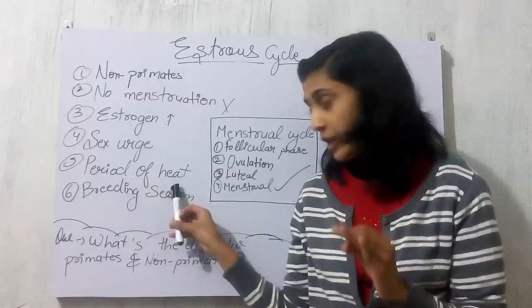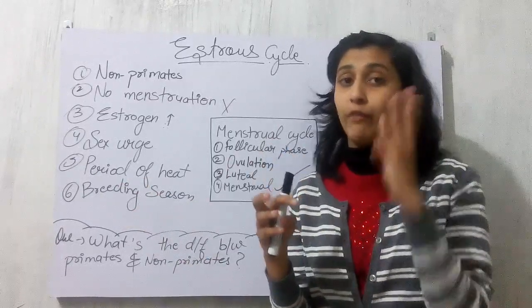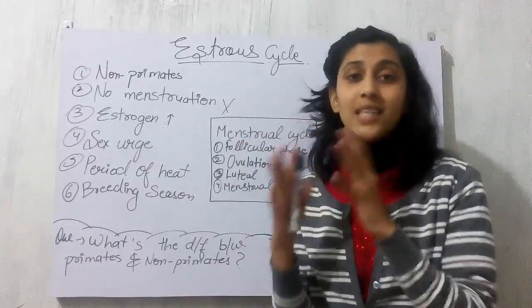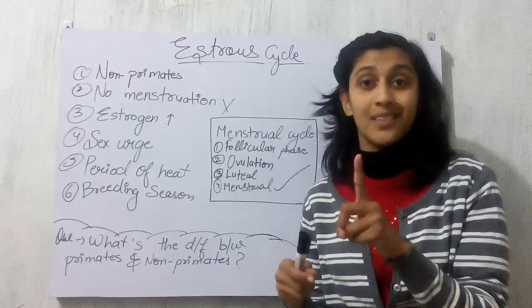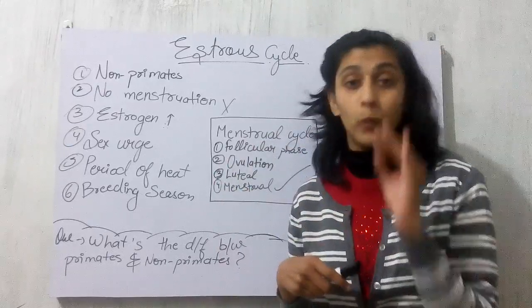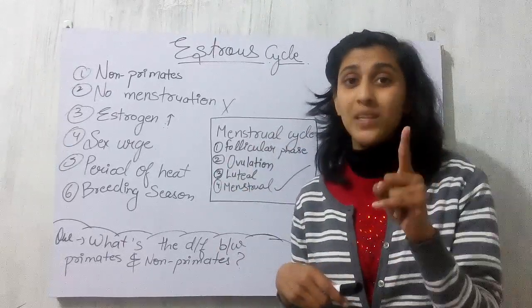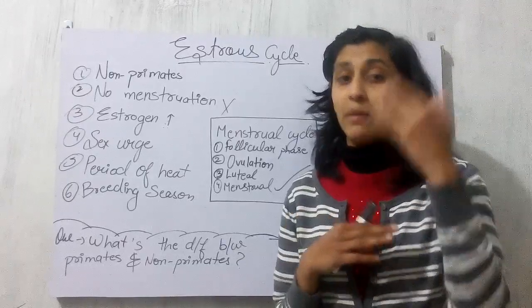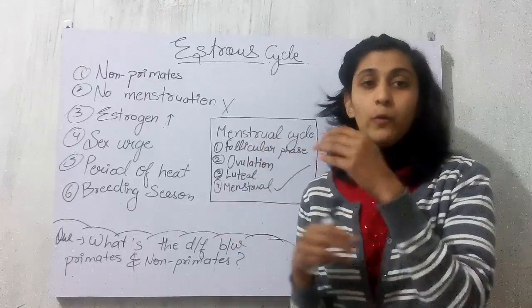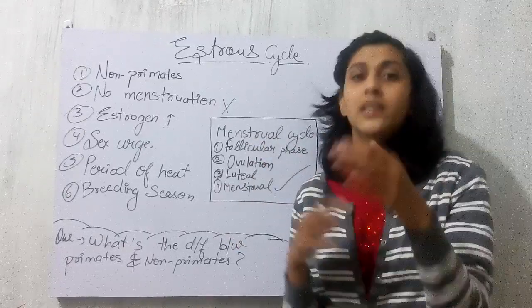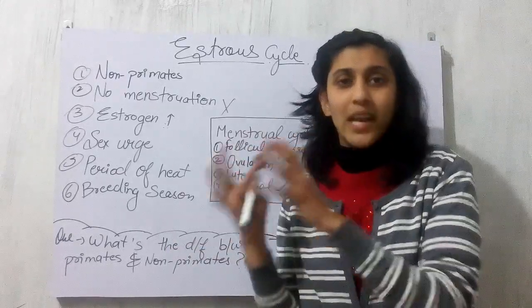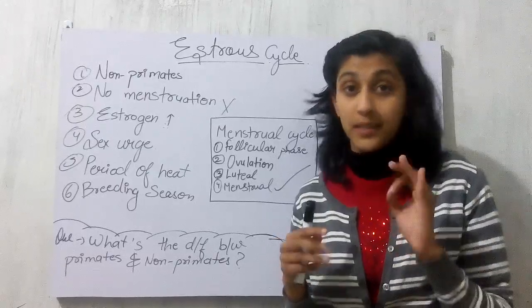During the period of heat, when estrogen level increases, the female will feel the urge to have sex. A very important point is that the estrous cycle happens only once in the breeding season — in every breeding season, this cycle can happen only once. In contrast, the menstrual cycle happens every month with no fixed restriction to a breeding season.